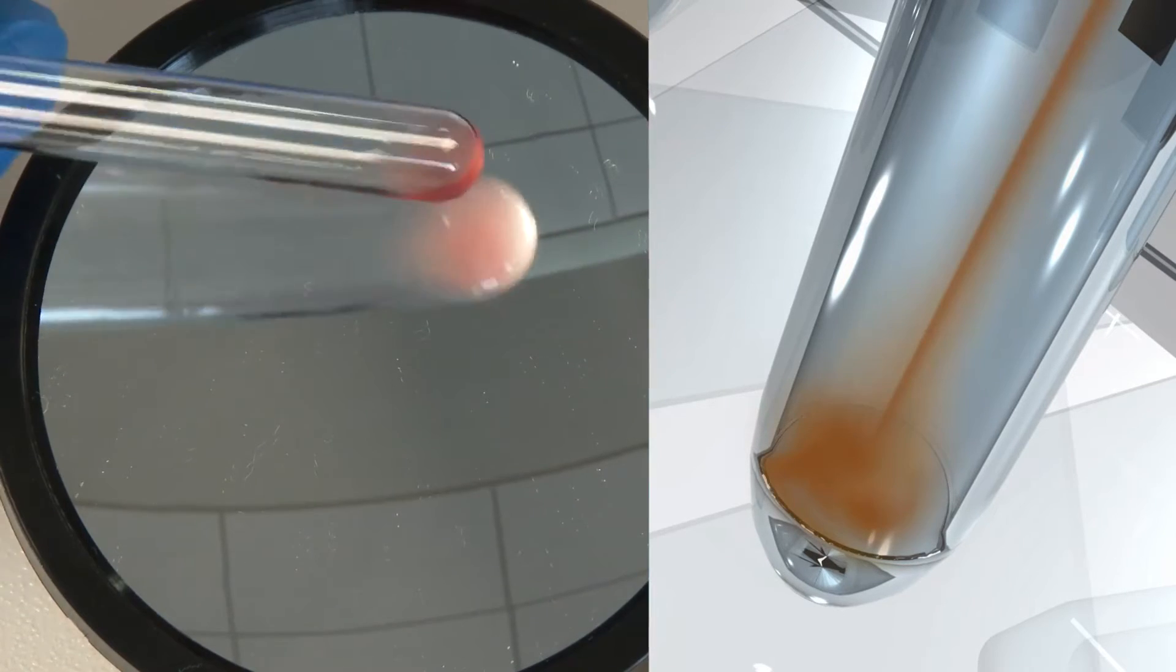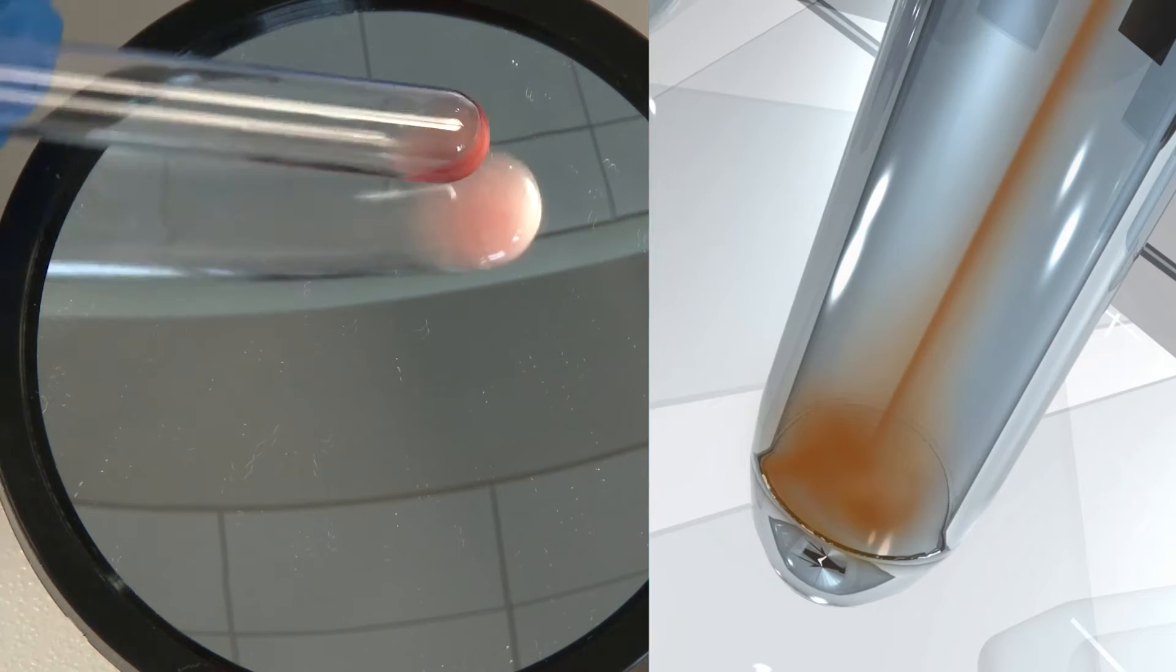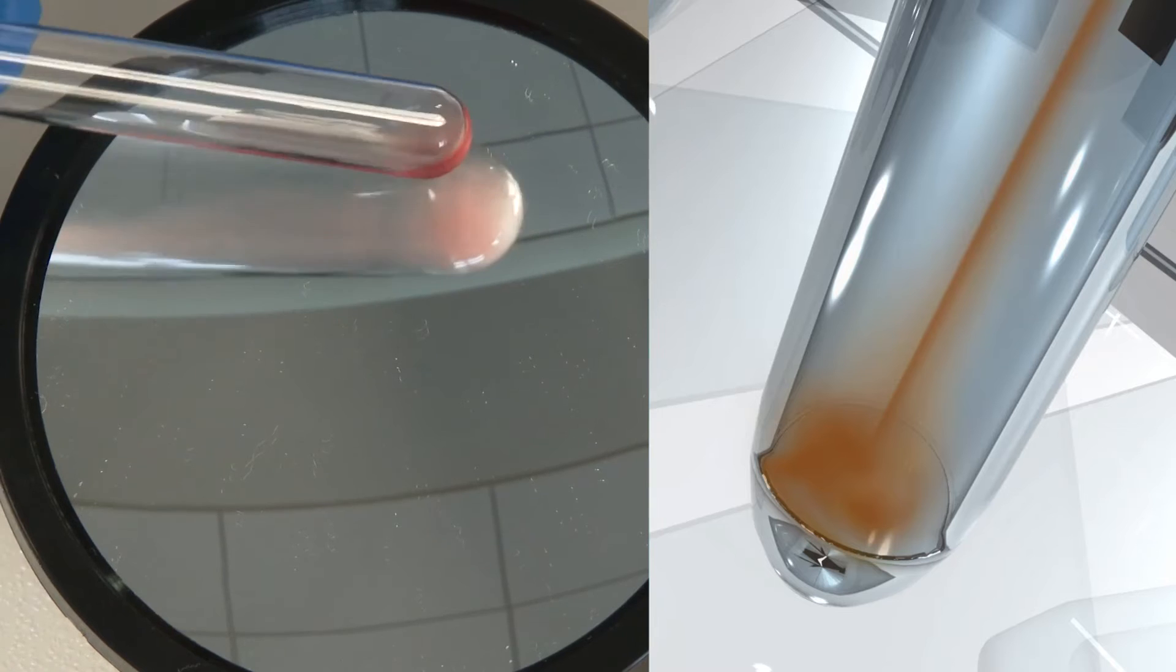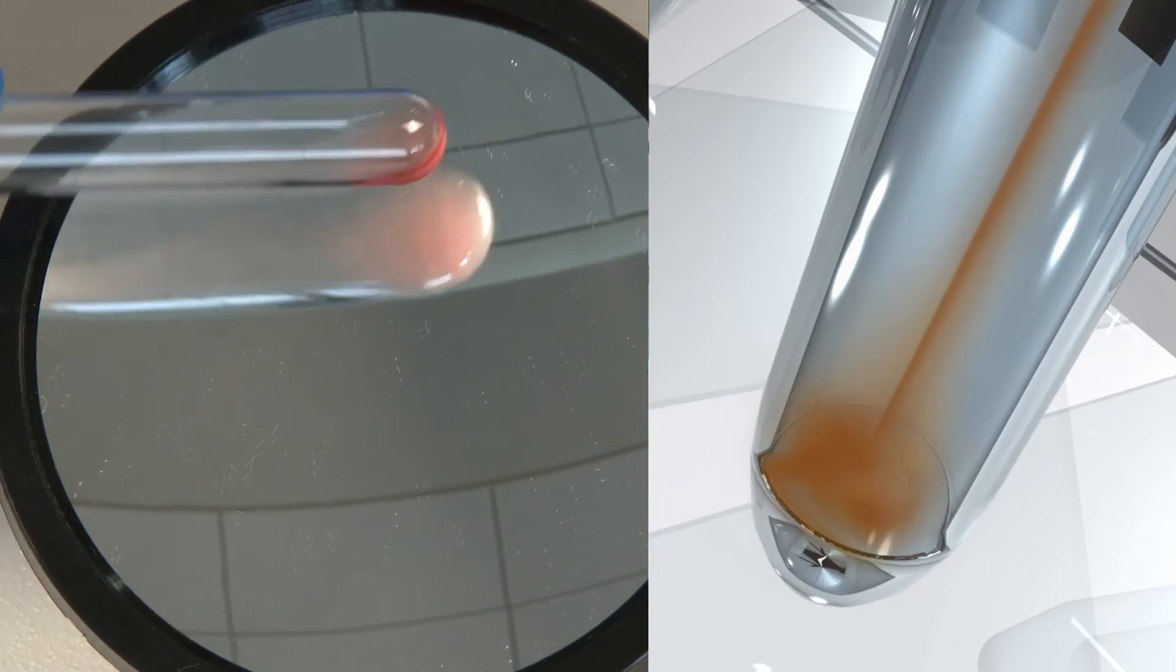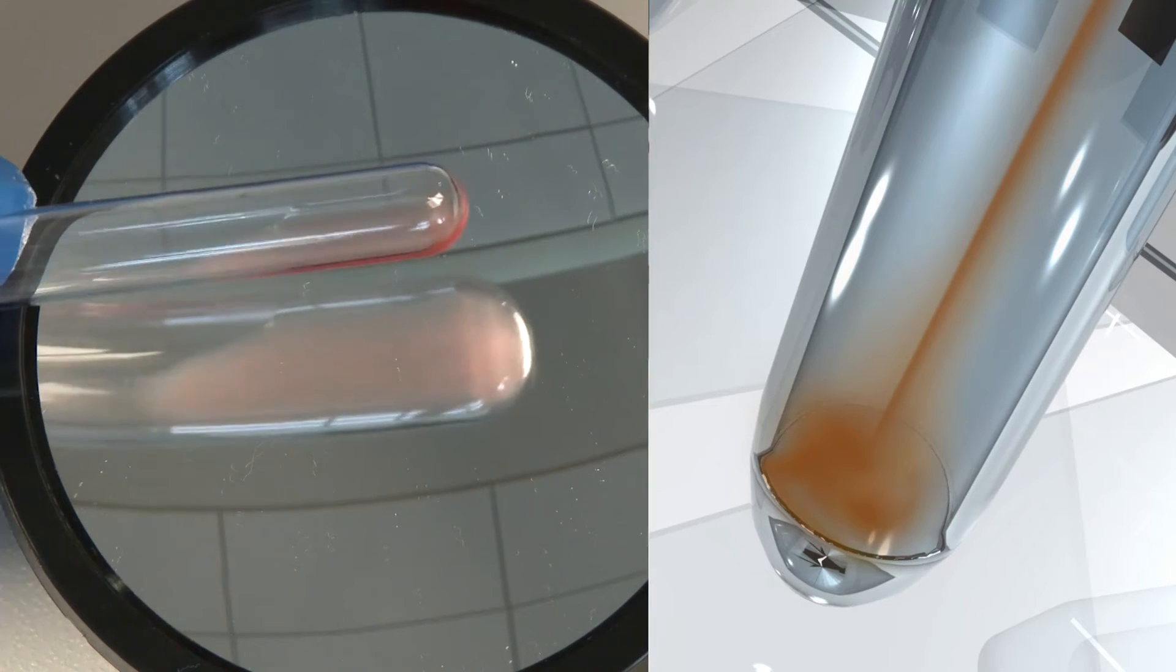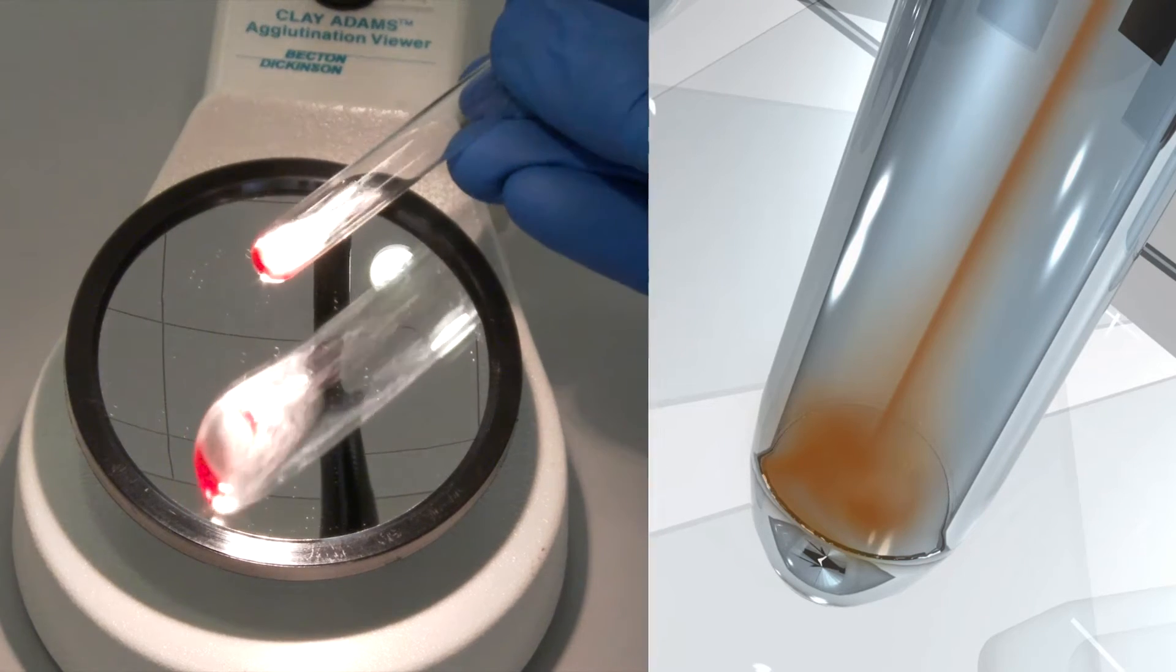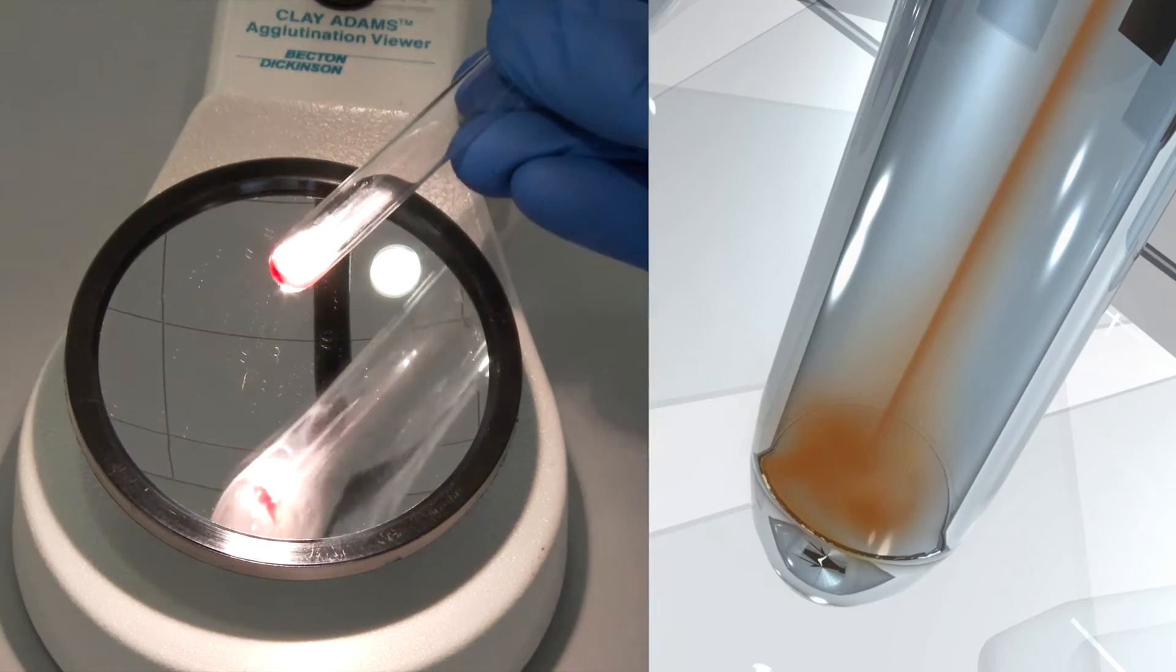A negative reaction is characterized by the appearance of an even cell suspension with no agglutinates detected. The cell button prior to rocking the test tube will demonstrate a smooth edge, and cells washing off the cell button while rocking the tube will often have a smoky appearance.